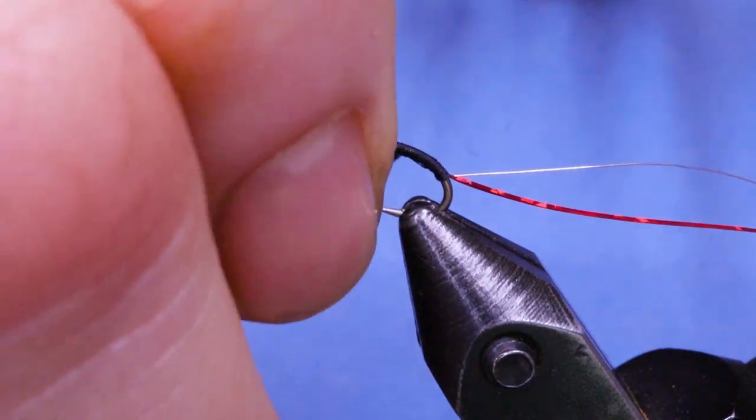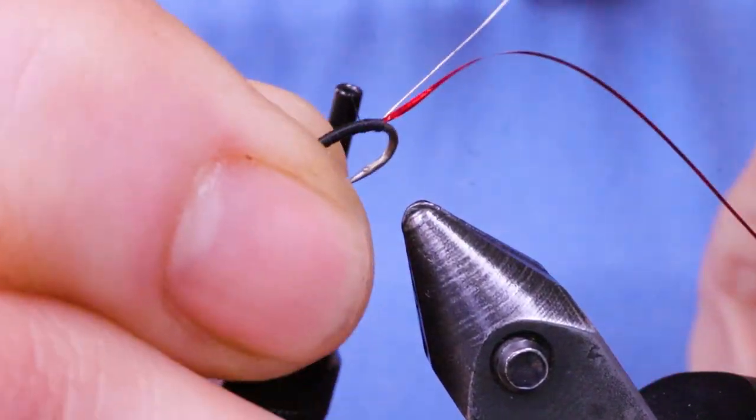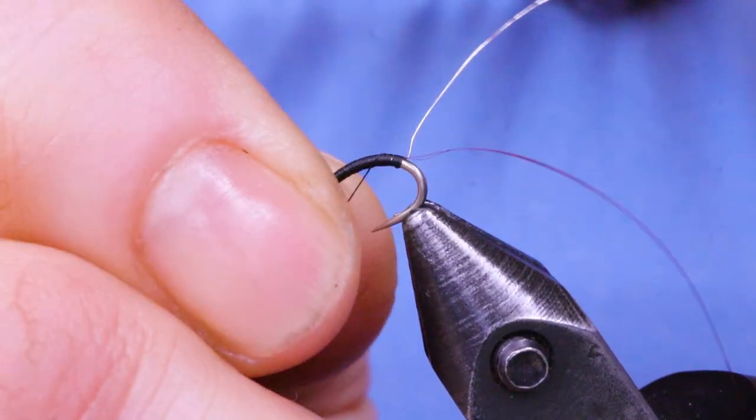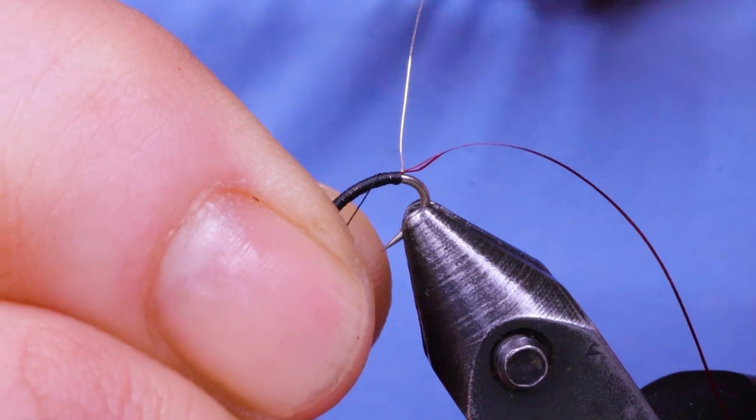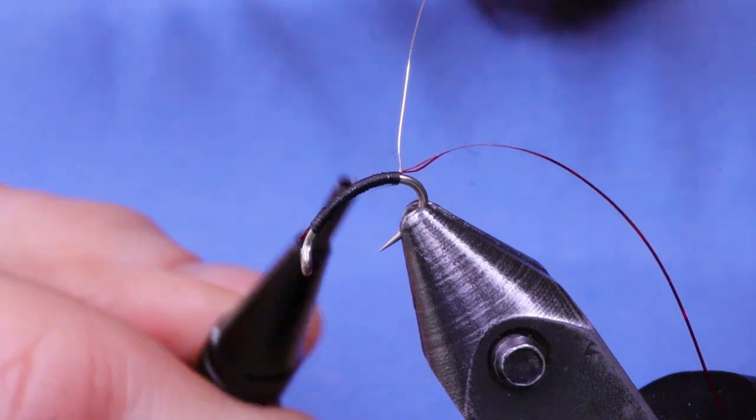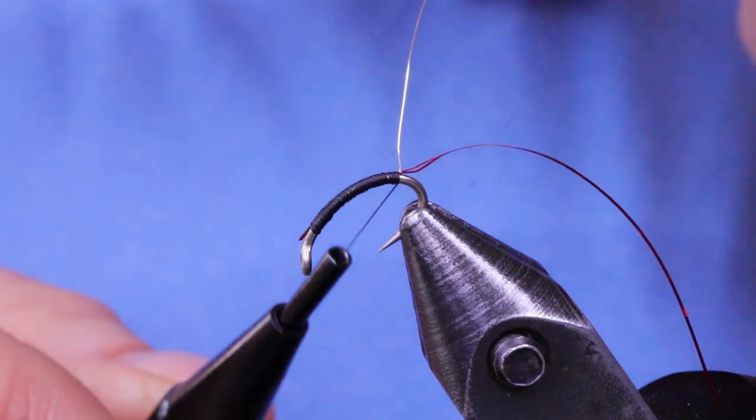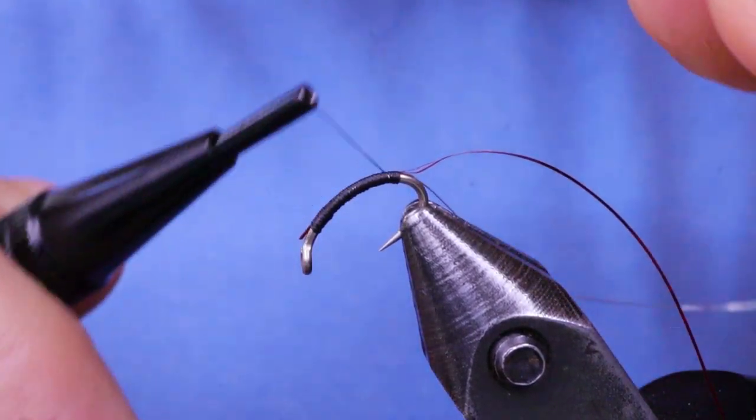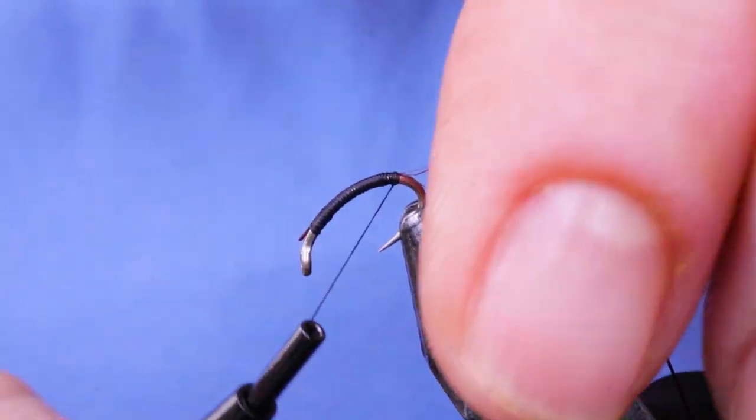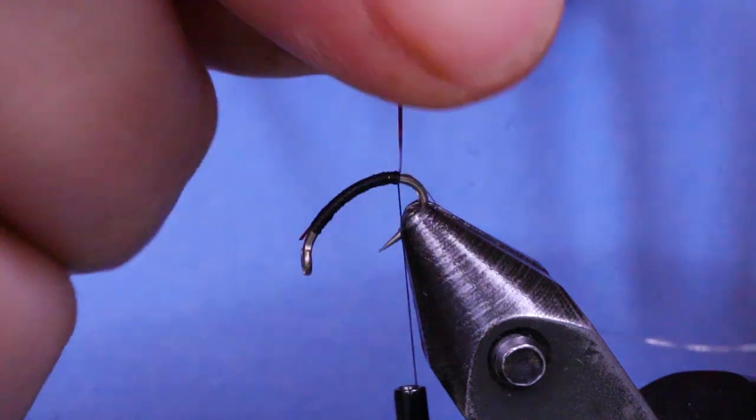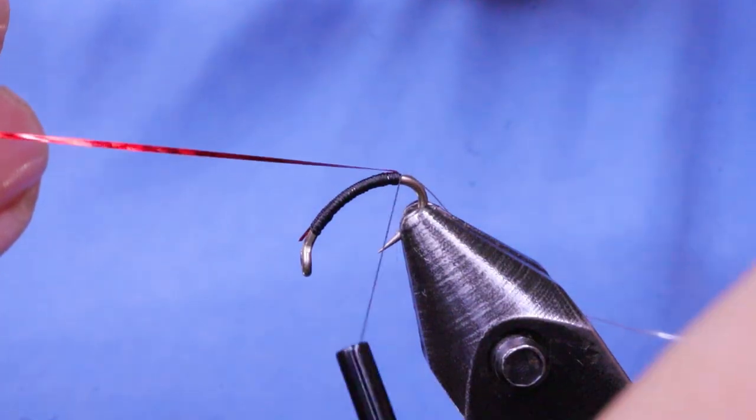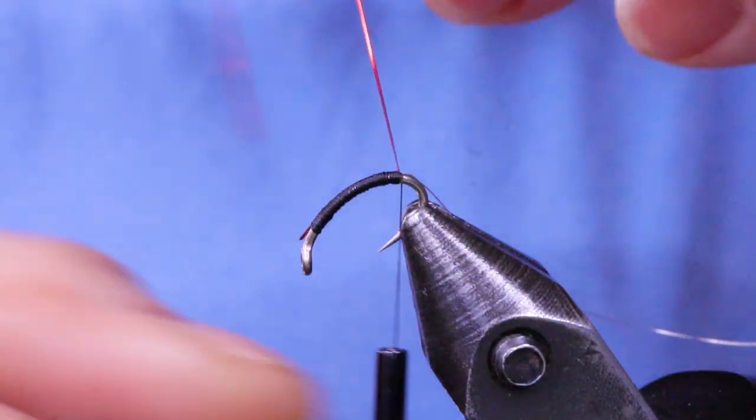Next I'm going to take my hook and just invert it in the vise. Thread out for that, just like that. And then what I'm going to do is just put a couple wraps here. I'm going to take the flash and I'm going to pull it over and I'm just going to place one wrap on top of it before moving my thread forward.